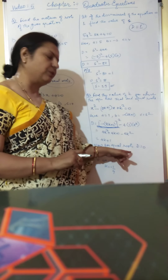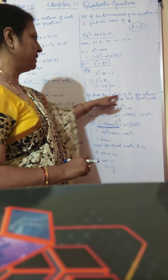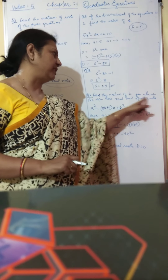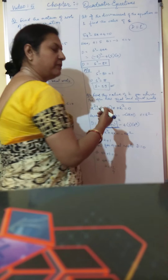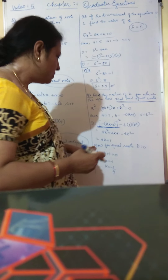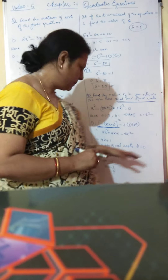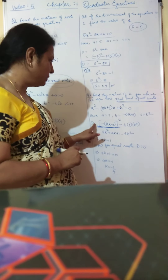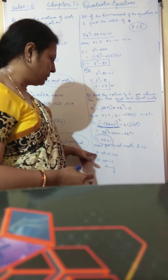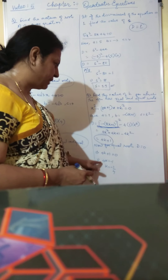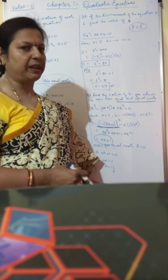Since the question asks for real and equal roots, the value of D must be 0. For real and equal roots, D equals 0. That implies 4k plus 1 equals 0, which implies 4k equals minus 1, and therefore k equals minus 1 by 4.